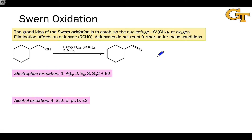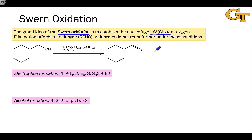The aim of all oxidative conditions of alcohols is to establish a good leaving group at oxygen. The grand idea of the SWERN oxidation is to place a particularly good leaving group on the carbonyl oxygen — the S+(CH3)2 group, or dimethyl sulfide.